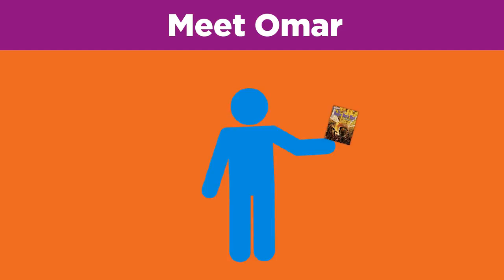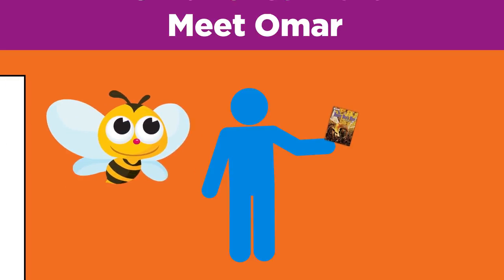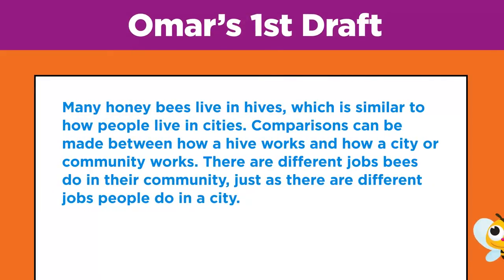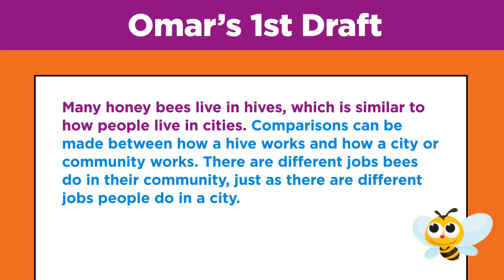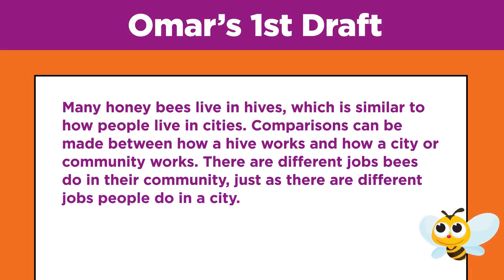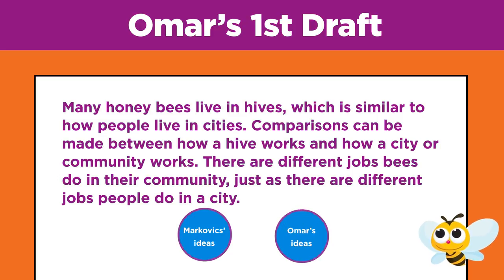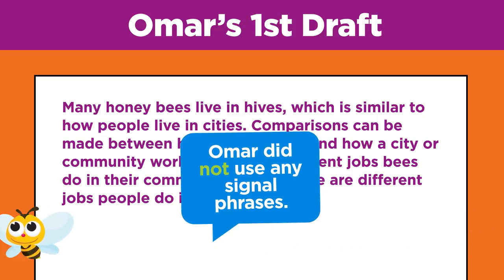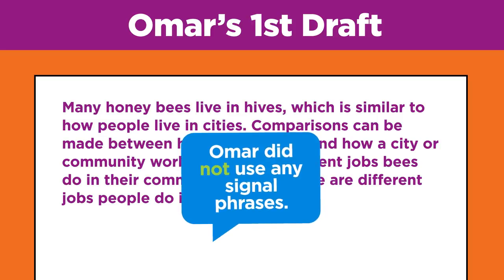Meet Omar. Omar wants to use some of Markovic's ideas in his research paper about how honeybees live as a community. But he will need to signal to the reader when an idea belongs to himself versus when it belongs to Markovic. This is Omar's first draft: 'Many honeybees live in hives, which is similar to how people live in cities. Comparisons can be made between how a hive works and how a city or community works. There are different jobs bees do in their community, just as there are different jobs people do in a city.' Can you tell which ideas are Markovic's and which are Omar's? They all look like they could belong to anyone, because Omar did not use any signal phrases.